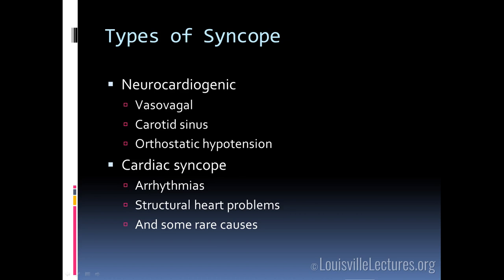The classic faint is a neurocardiogenic syncope and is a clinical diagnosis — you ask the right type of questions. The reason it happens is a combination of reflex withdrawal of sympathetic tone, causing the vascular bed to dilate with blood pooling in the feet, while simultaneously vagal tone increases and slows heart rate. No blood goes up to the brain, and down you go. Carotid sinus syncope is mechanical manipulation of the carotid bodies that alters sympathetic and parasympathetic tone. I had one elderly gentleman playing Scrabble with his hands under his chin and down he went — mechanical stimulation.